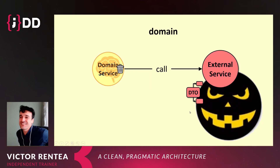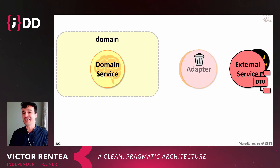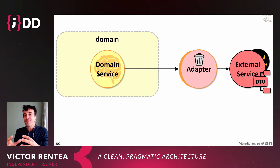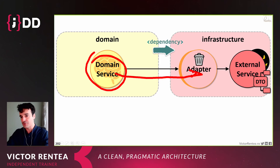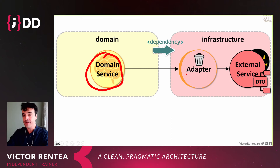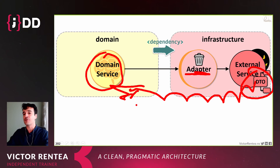Instead of calling the external service directly, put an adapter in front of it — like the Gang of Four adapter pattern. The domain service calls the adapter; the adapter calls the external service. The adapter shields your domain from all the complexity of working with the external API. However, if the domain class calls the adapter directly, the domain module would depend on the infrastructure module — that's bad, because you'd also inadvertently see external DTOs from your domain.